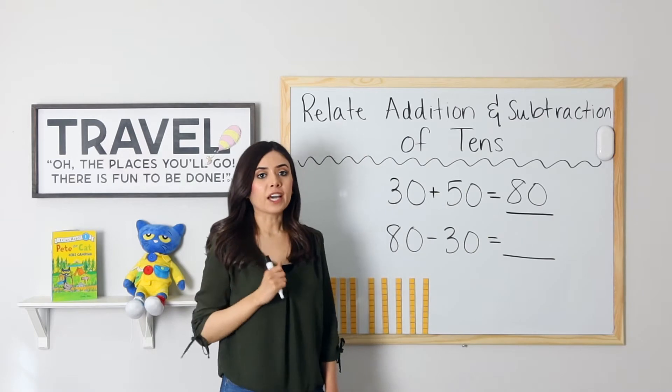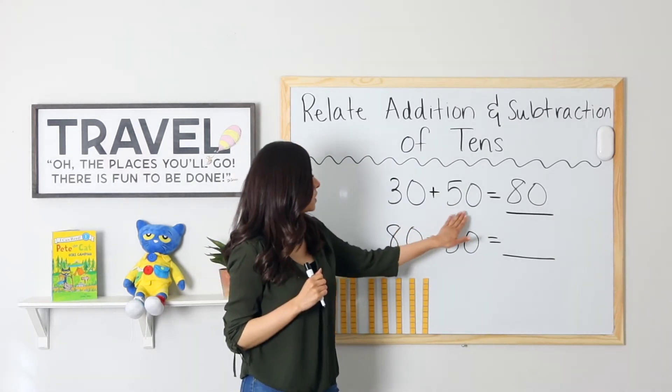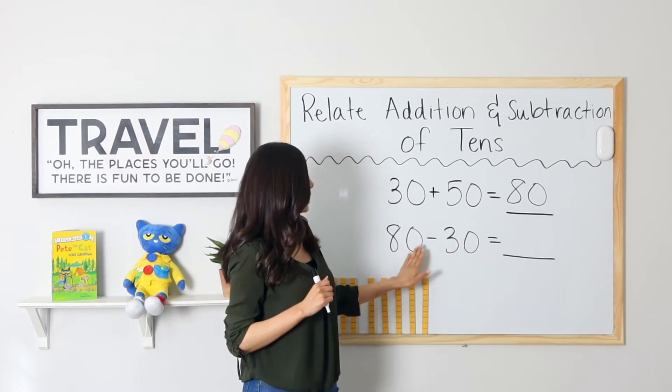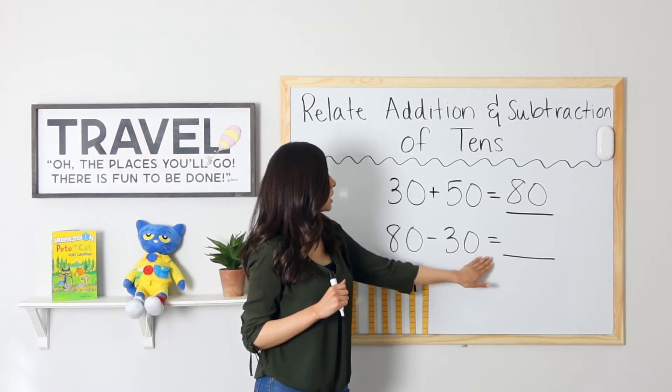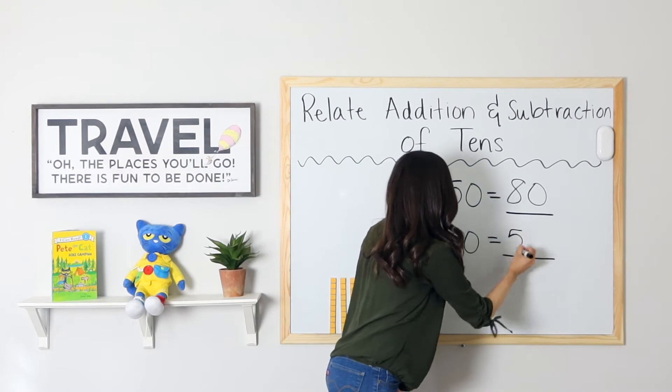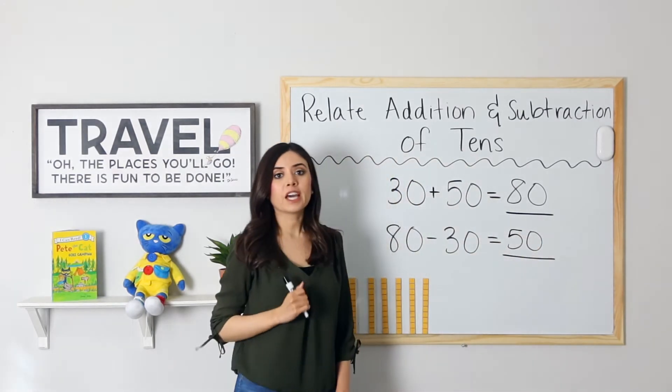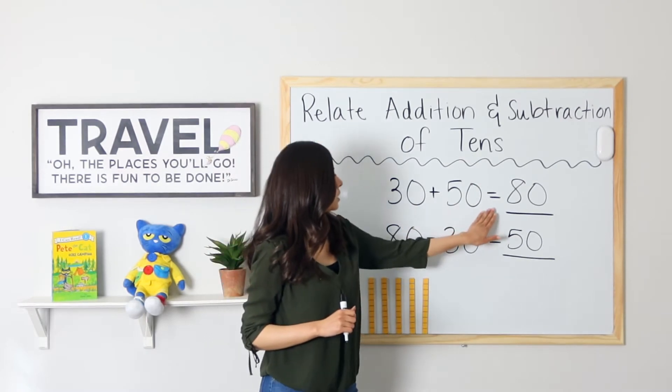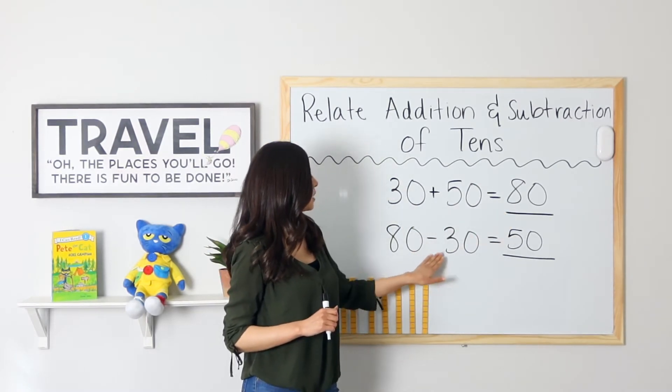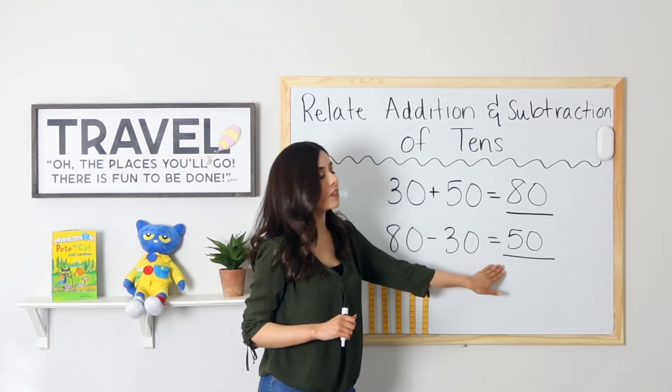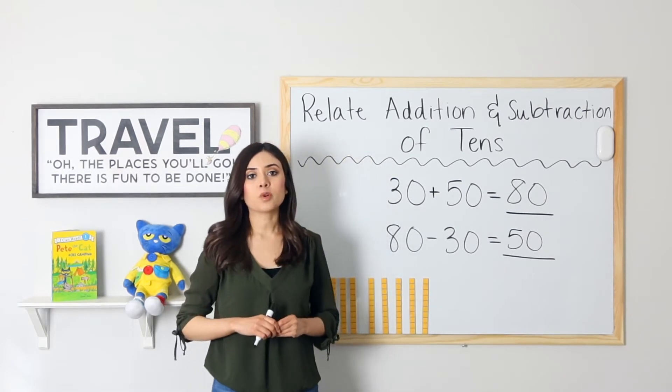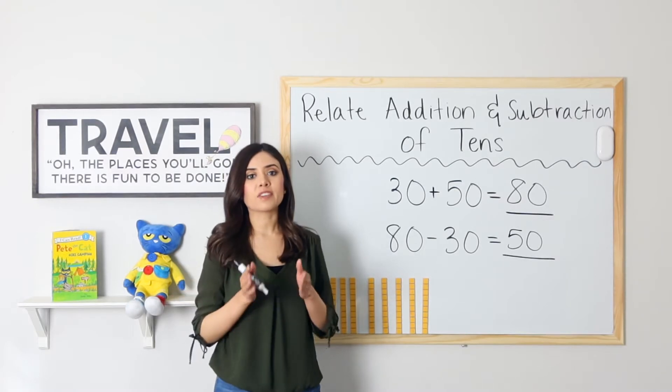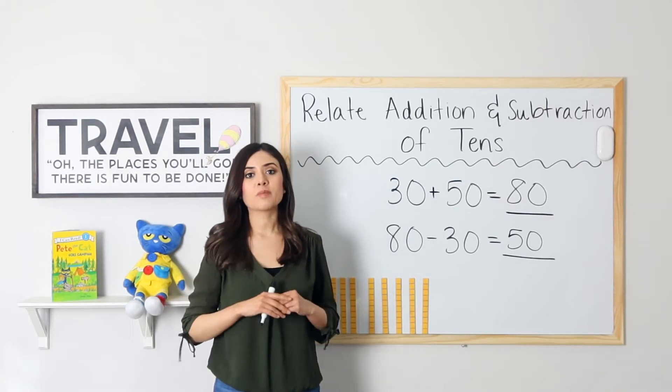Now, if I know that 30 plus 50 equals 80, that means that 80 minus 30 equals 50. Do you see how we use the same three numbers? 30 plus 50 equals 80. 80 minus 30 equals 50. Just like in our example, when I said 3 plus 7 equals 10, 10 minus 7 equals 3. It's the same thing.